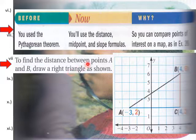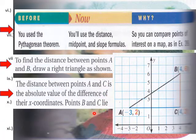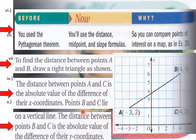Here is an example. To find the distance between points A and B, draw a triangle as shown here. We draw a line here, then draw a rise line and a run line this way. We can use coordinates to figure out distance. The distance between points A and C is the absolute value of the difference of their x-coordinates. Points B and C lie on a vertical line.